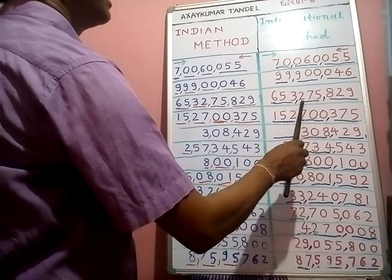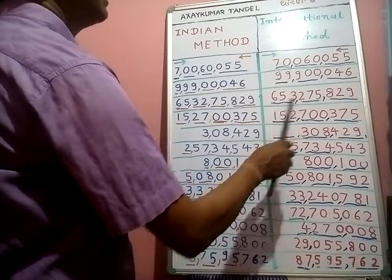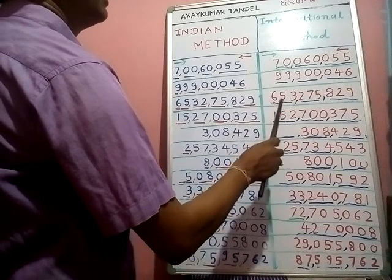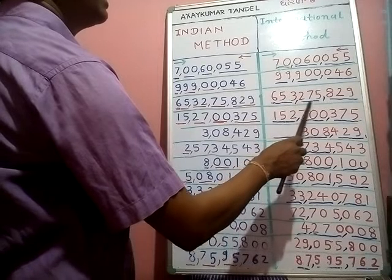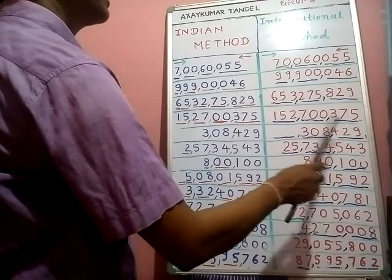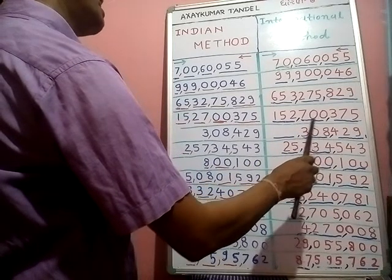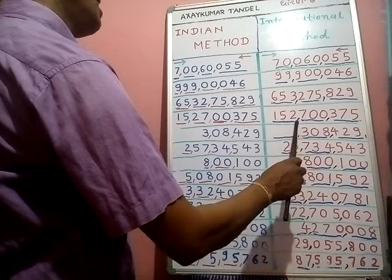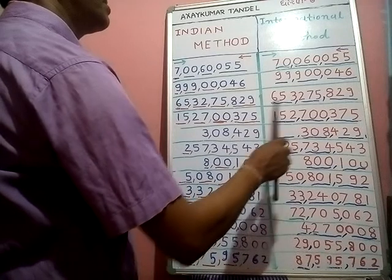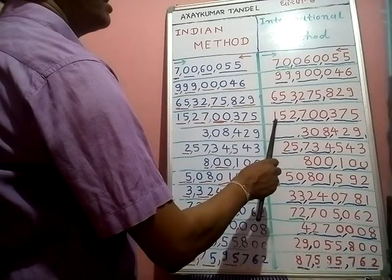Next one — ones, tens, hundreds, thousands, ten thousands, hundred thousands, millions, ten millions, hundred millions. We read: six hundred fifty-three million two hundred seventy-five thousand eight hundred twenty-nine. Next one — hundred millions. We read: one hundred fifty-two million seven hundred thousand three hundred seventy-five.